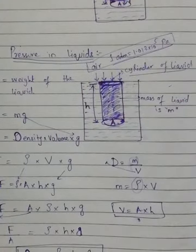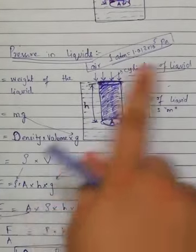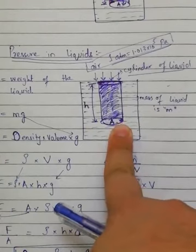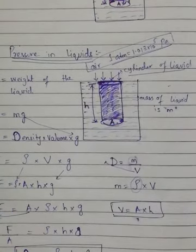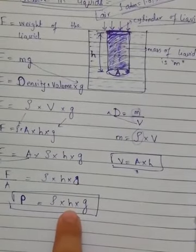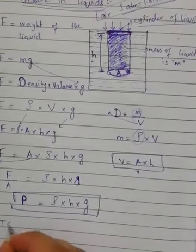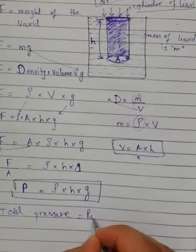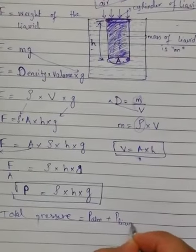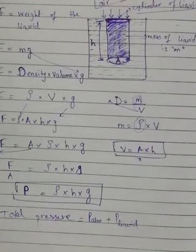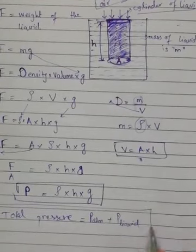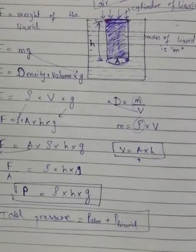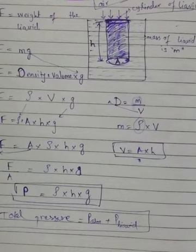Suppose this is a swimming pool, and you are present at some depth, at this portion. The pressure you feel will not be calculated just from this formula alone. The pressure you feel is the total pressure, and that total pressure is actually calculated by the pressure due to the atmosphere plus the pressure due to the liquid which is present above your body. This formula will help you to find the total pressure that you feel. So that's all about the pressure due to liquid. If you have any query you can ask me. Thank you students.